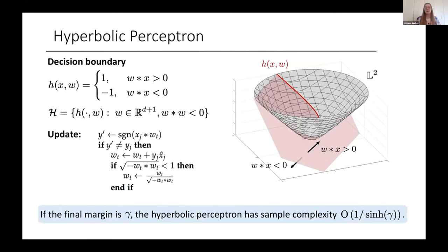We then also perform a theoretical analysis of the hyperbolic perceptron algorithm. In particular, we show that we need on the order of one over sinh of gamma steps to achieve a margin of gamma. Here the margin is measured with respect to a geodesic distance, as opposed to Euclidean distance in the Euclidean setting. Geodesic distance means that our data points, our features, are now points on a manifold. And this geodesic distance between them is the length of the shortest path along the manifold.